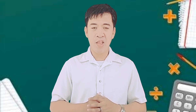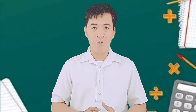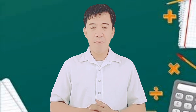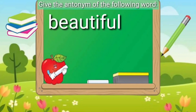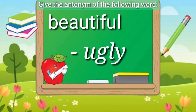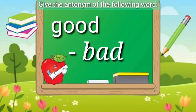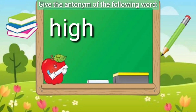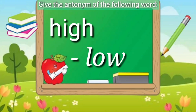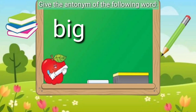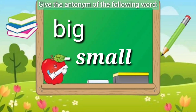Before we proceed to our topic, let's answer first the following. Give the acronym of the following words. Number 1: Beautiful — the acronym is Ugly. Next: Good — the acronym is Bad. High — the acronym is Low. Big — and the acronym is Small.